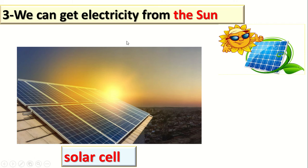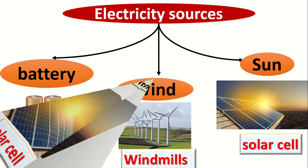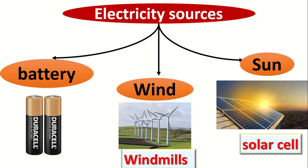So we can get electricity by three sources: number one, by battery; number two, by the wind using windmills; number three, by the sun using solar cells. Battery, wind, and sun — battery by battery, wind by windmills, and sun by solar cells.